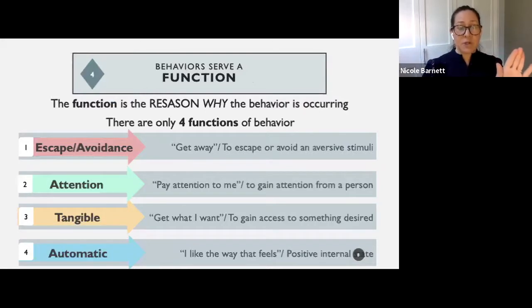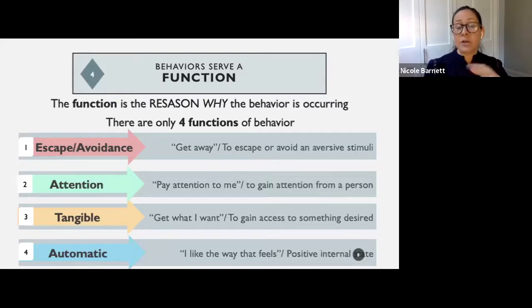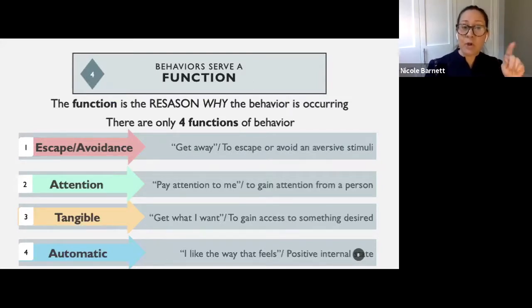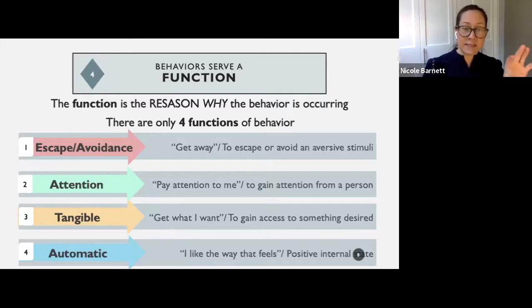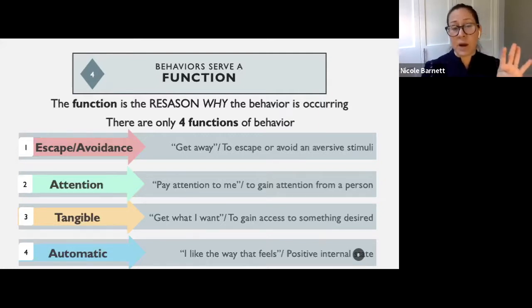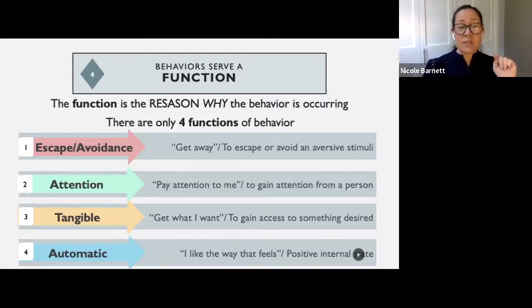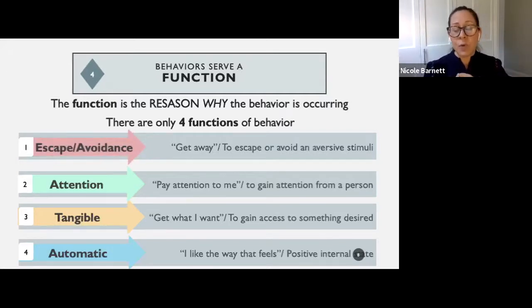Behavior serves a function — this is my favorite part. You're going to learn how to figure out what the function of your child's behavior is and become your own scientists and detectives. There are only four possible reasons why behavior occurs. The first is escape/avoidance — to get away, to escape or avoid an aversive stimuli, which just means something they don't like. Could be a person, an event, a place, a sound — anything.